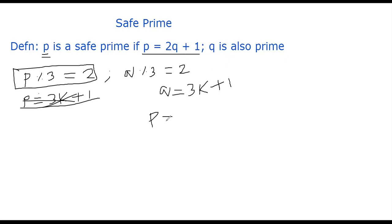That means p is equal to 2 times 3k plus 1 plus 1, right? Which is 6k plus 3, which means we can take 3 as a common. That means you have 3 times 2k plus 1. Obviously, you wrote p as a product of two different numbers.